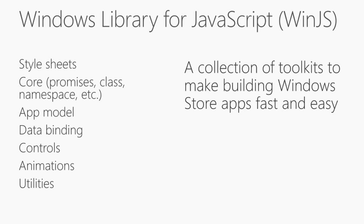There are controls — all of the Windows controls, time pickers, date pickers — all of these things are in that library. Animations are crucial because most JavaScript application platforms which go cross-platform never care about animation — it's always the thing which gets forgotten. Between designers and developers, animations are always the things which get lost. But WinJS makes it very simple to do these animations. It's a collection of toolkits to make building Windows Store apps fast and easy.